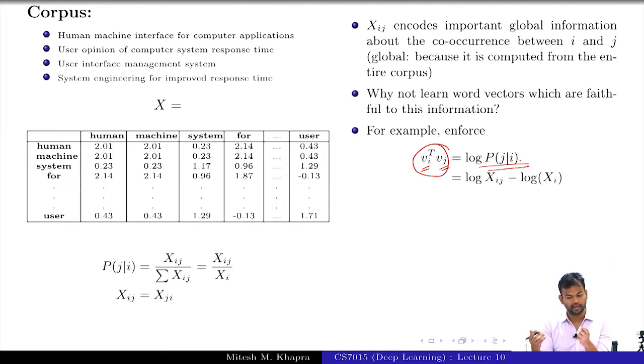The other notion of similarity is that how likely J is to appear in the context of I, which is given by P of J given I. So why not set up my task such that whatever vectors I learn are actually faithful to this global similarity that I have computed from the entire corpus. How many of you get this intuition? How many of you see the difference between this and the predict-based models? In the prediction-based models you are operating at one word pair at a time.